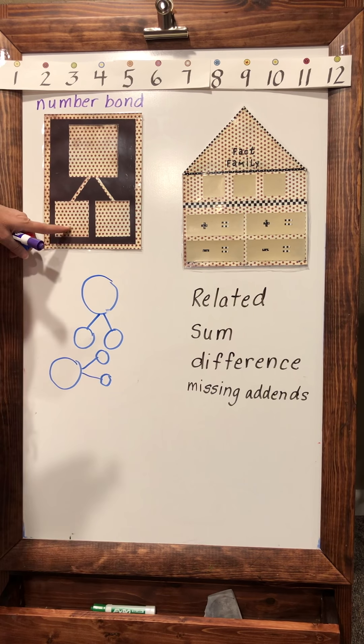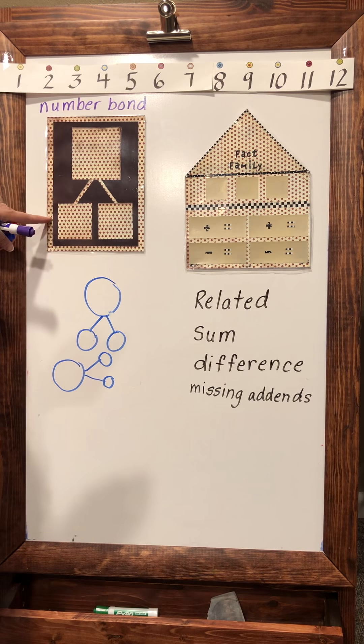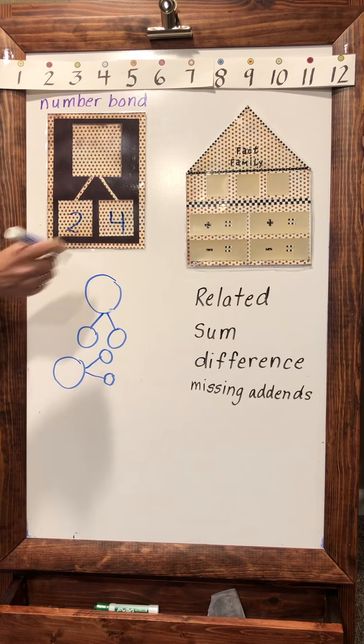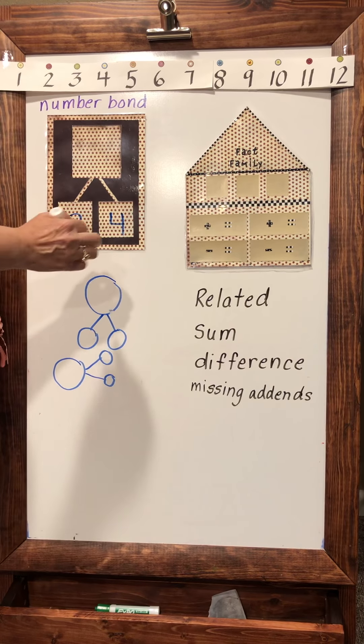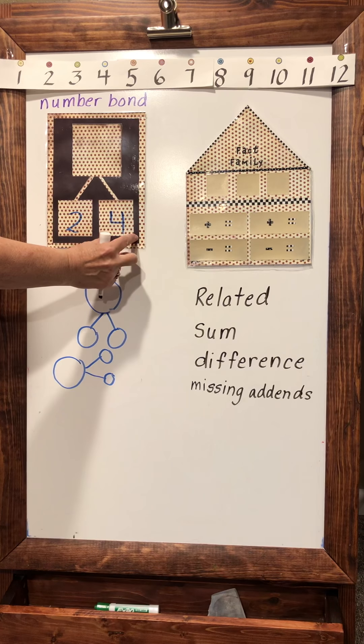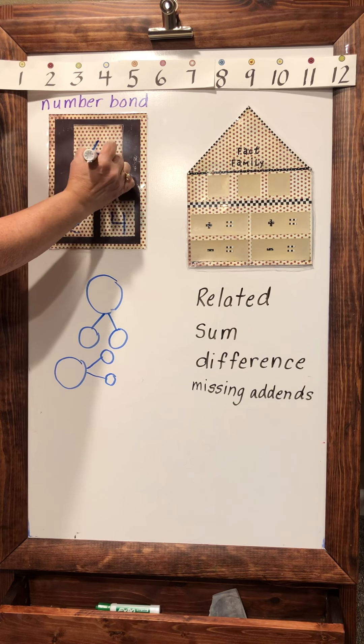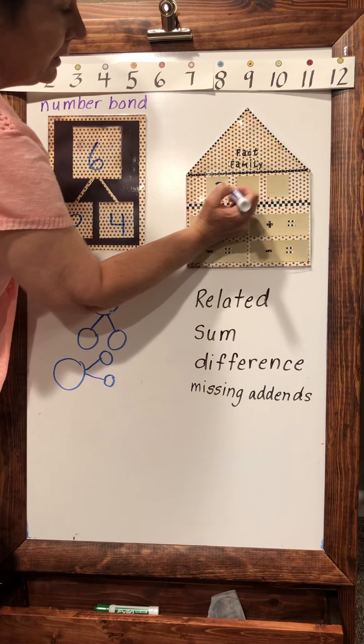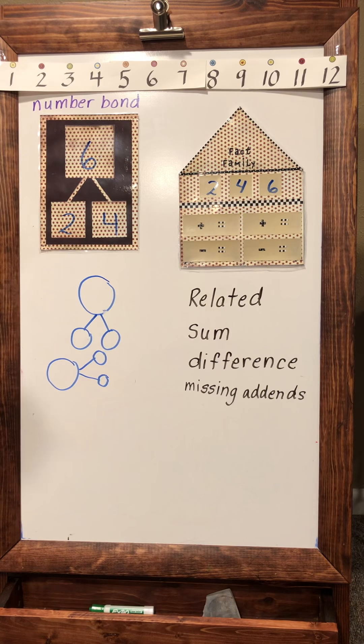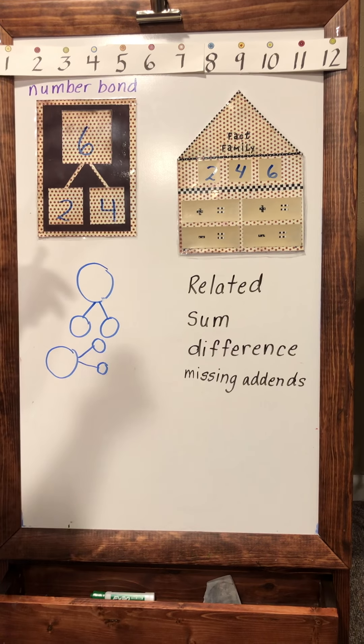The way this works is if you're going to build a fact family from a number bond for your kids to practice, the quickest easiest way is to put the two numbers you want to add together, called the addends—I forgot to write addends up there, I did put missing addends but these are addends. When you have this two and this four, the reason the lines come up together is because that is going to be your sum up here. Those are the three numbers you're going to use for your fact family, and that shows how the numbers on this bond are related.